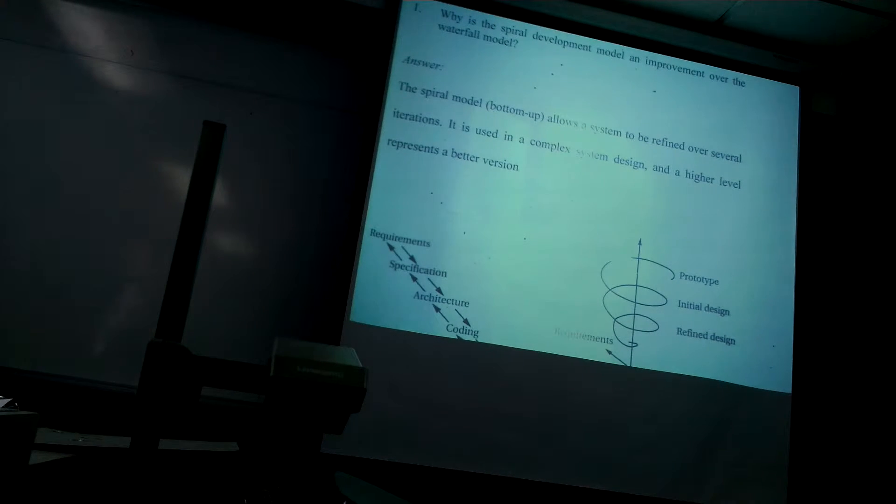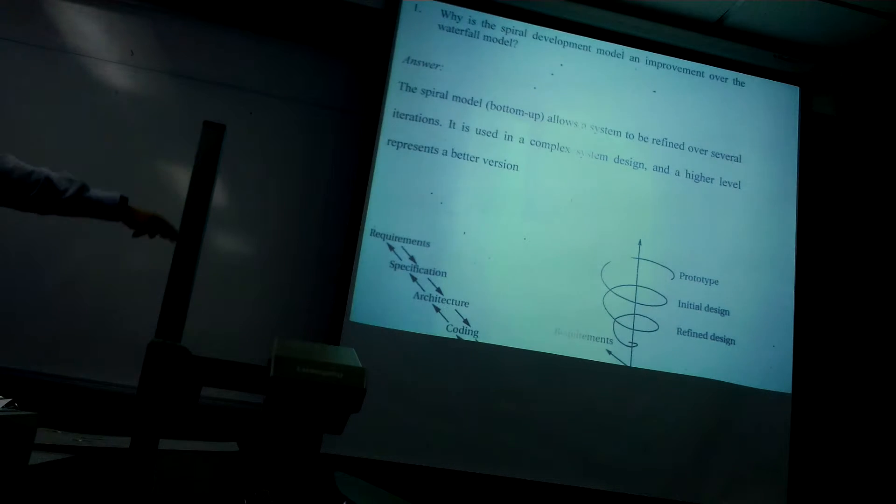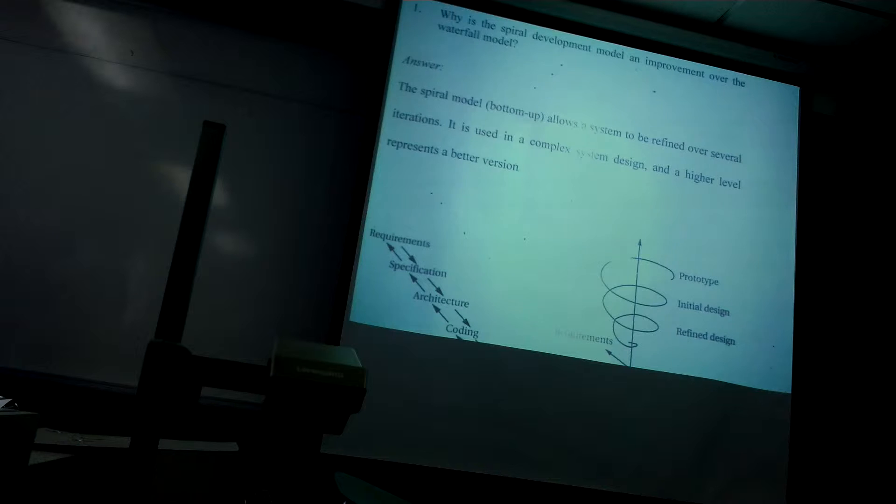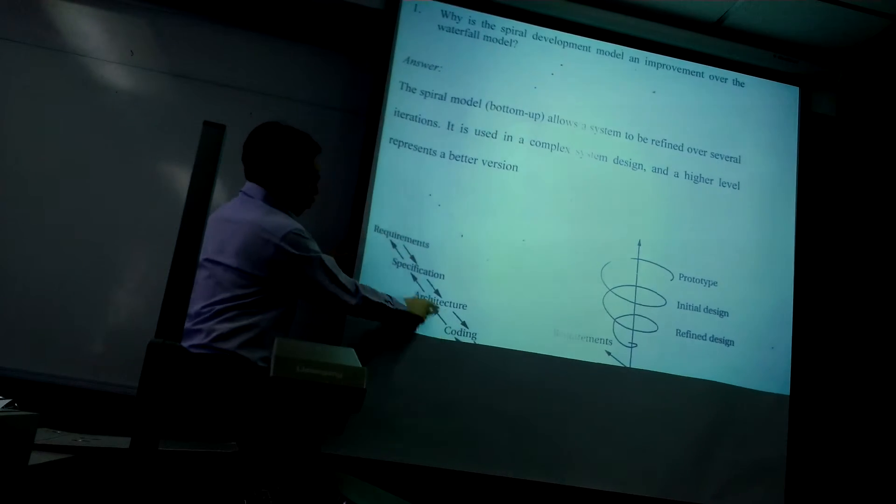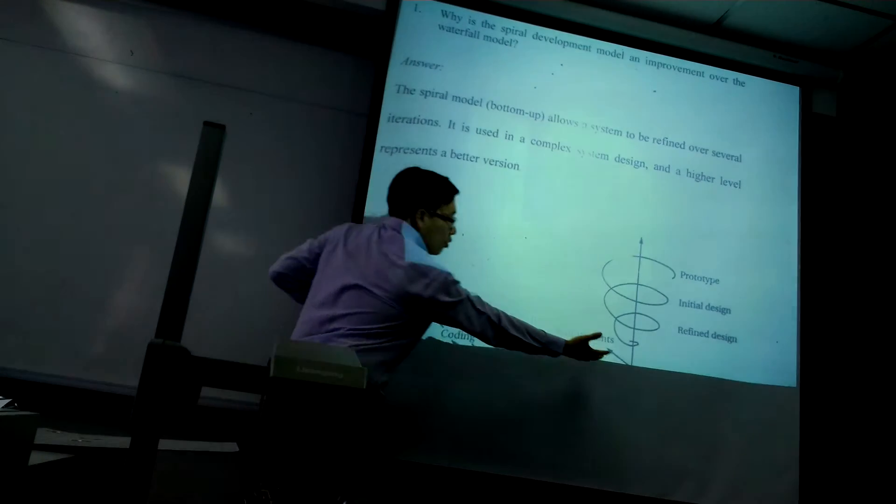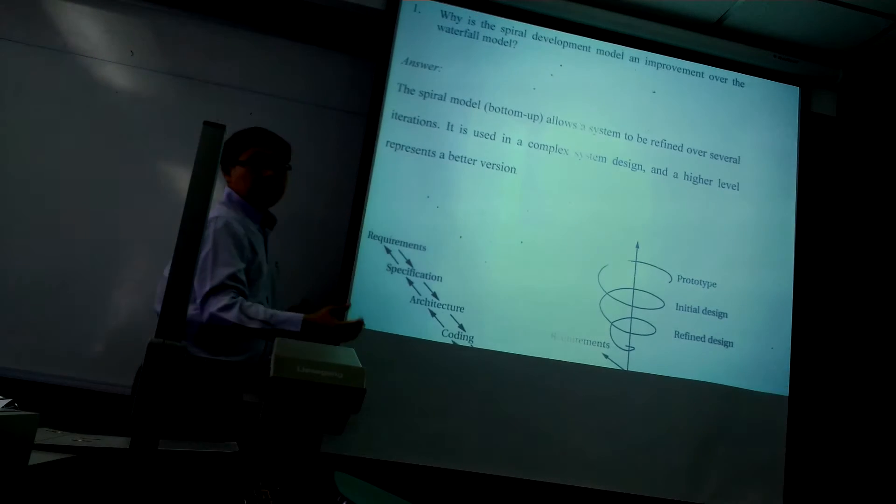So, spiral is a bottom-up approach that allows a system to be refined over several iterations. It's used for some complex system or software design. And the higher level represents a better version, or the more advanced version. So, that is the very simplified explanation.